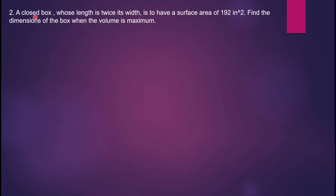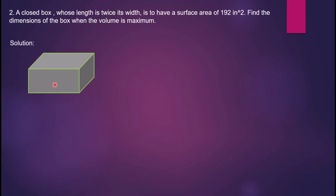Next problem: a closed box whose length is twice its width is to have a surface area of 192 square inches. Find the dimensions of the box when the volume is maximum. We can draw the closed box identifying its length, width, and height h.